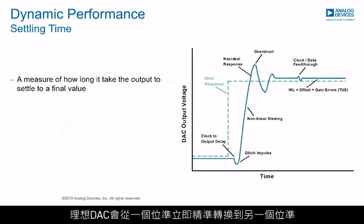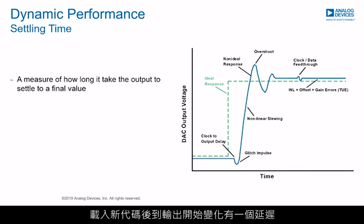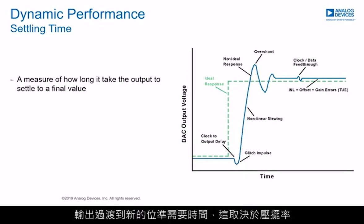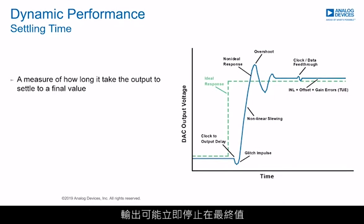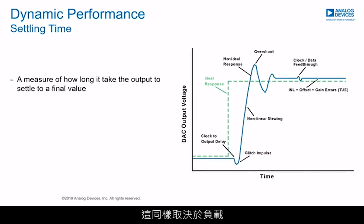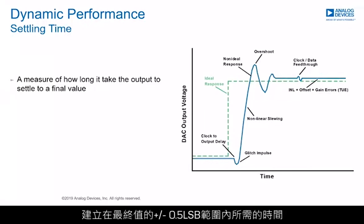An ideal DAC would transition from one level to another instantly and accurately. A real-world DAC, however, will not follow this ideal characteristic. When a new code is loaded, there is a delay before the output starts to change, and the output will take time to transition to its new level — this is dependent on the slew rate. The output may overshoot and oscillate before settling, which can be load-dependent. Settling time is the measure of how long it takes for the output to settle to ±0.5 LSBs of the final value from when it was programmed to update — this can be from the last clock edge or the rising edge of a chip select.